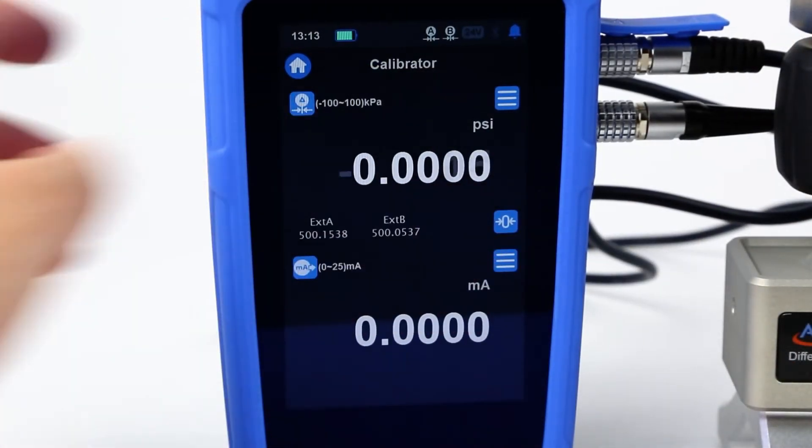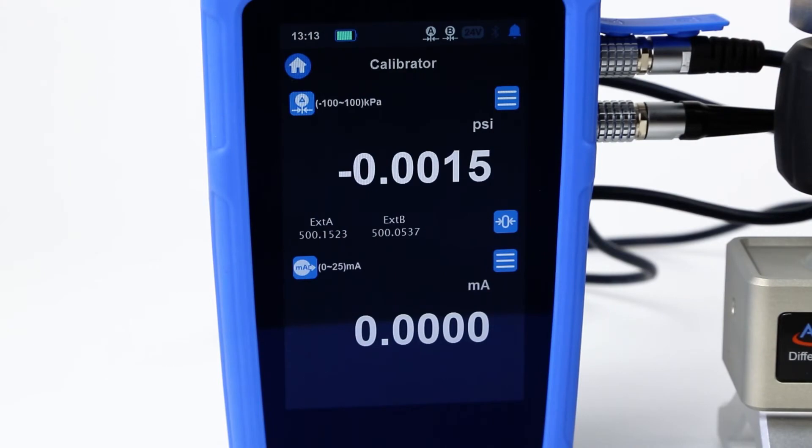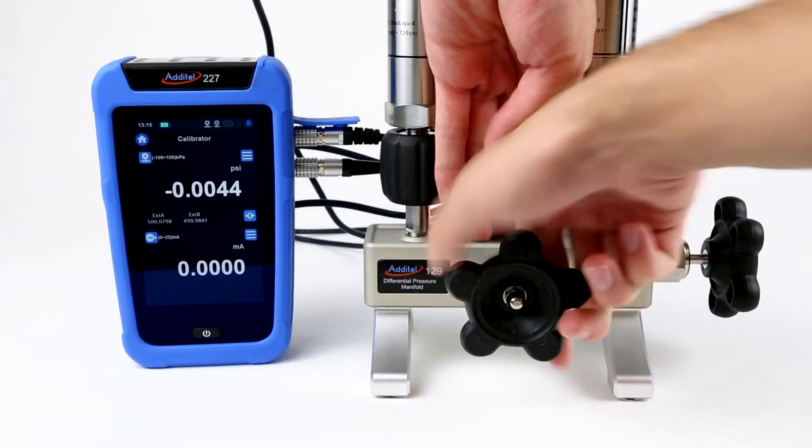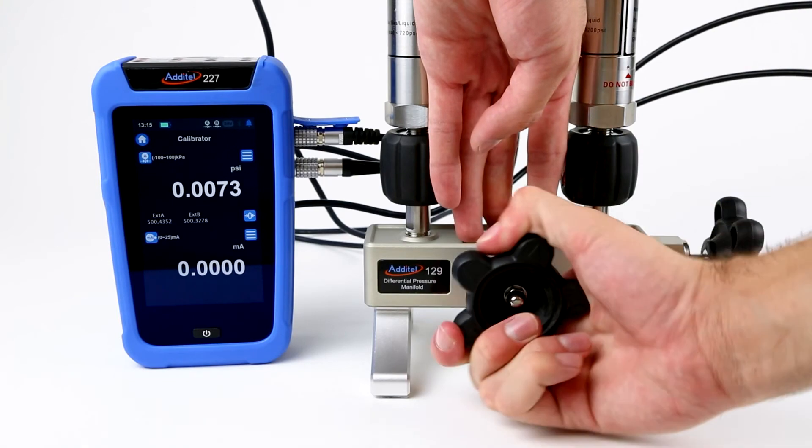Now we zero both pressure modules at the static pressure, which happens to be 500 psi in this case. Now that we are zeroed, we will isolate the low pressure port from the high.